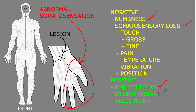The last of these is allodynia — the perception of pain from a stimulus that is not normally noxious or painful. For example, if the skin is lightly touched and the person gets a painful sensation such as burning or stabbing, that is called allodynia. These three — paresthesias, dysesthesias, and allodynia — can be called positive somatosensory abnormalities, because there is something extra in addition to normal somatosensory function. This is opposed to negative somatosensory abnormalities such as numbness or somatosensory loss, where there is simply a loss of function.